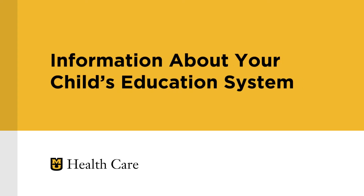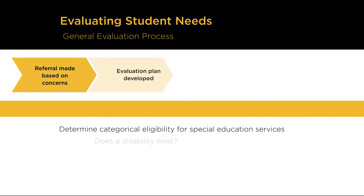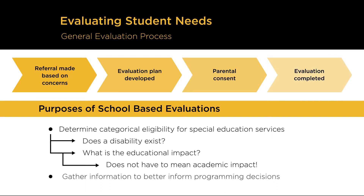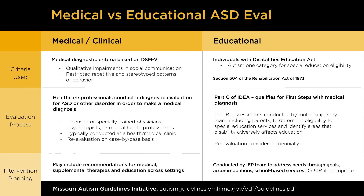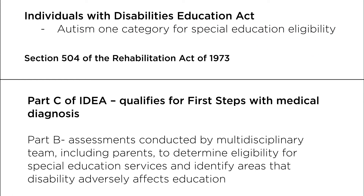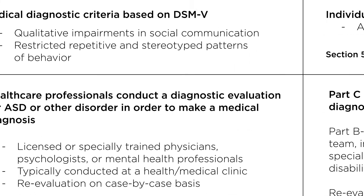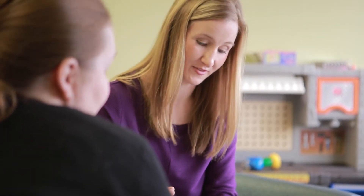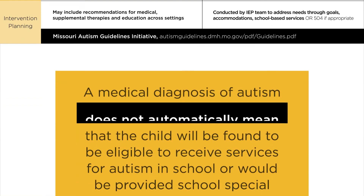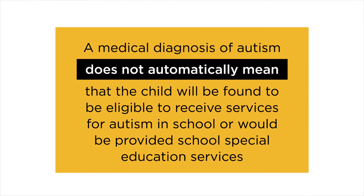As your child has been identified as eligible for special education services through your school district in the area of autism, it is important to understand some basic information about the educational system for students with disabilities. There are several important distinctions between educational eligibility and medical diagnosis of autism. School-based eligibility for autism means that the student has been evaluated by a school special education team and met state criteria for the special education category of autism. This is separate from a medical or clinical diagnosis of autism, which is often made by a clinical psychologist or physician at a medical clinic. Educational eligibility for autism does not automatically mean that a child will have a medical diagnosis of autism. Similarly, a medical diagnosis of autism does not automatically mean that the child will be found eligible to receive services for autism in school or would be provided school special education services.